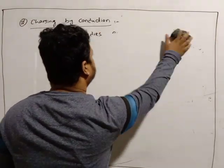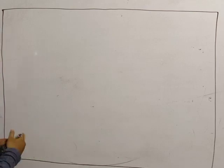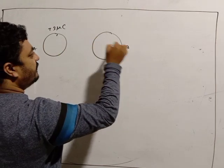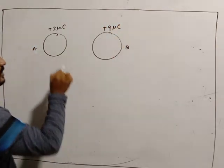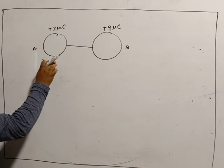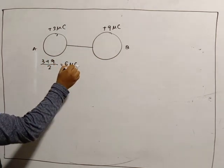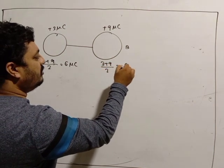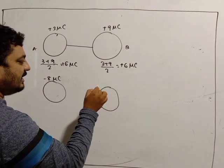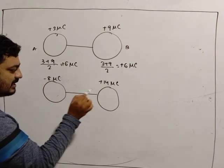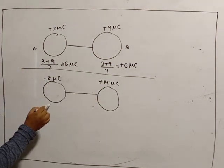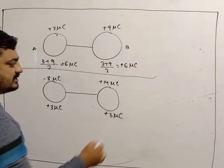Now let's do some problems. Let body A have charge +3 microcoulomb and body B have charge +9 microcoulomb. If they are in contact by a conductor, the final charge on each is (3 + 9) / 2 = 6 microcoulomb. Another example: if one body has −8 microcoulomb and the other has +14 microcoulomb, the final charge on each is (−8 + 14) / 2 = +3 microcoulomb.